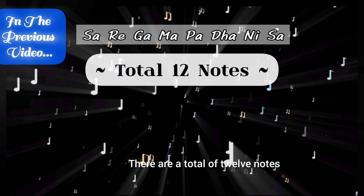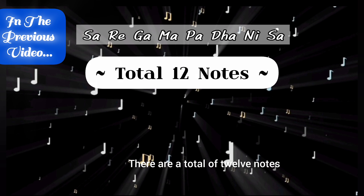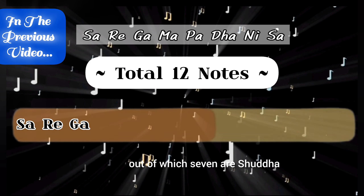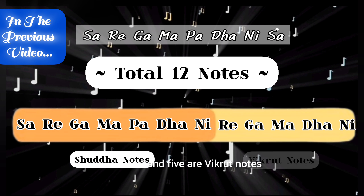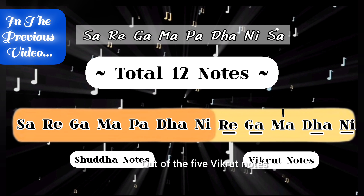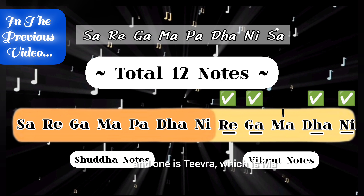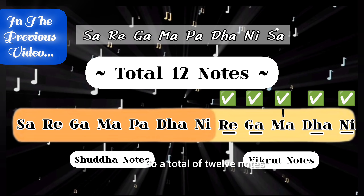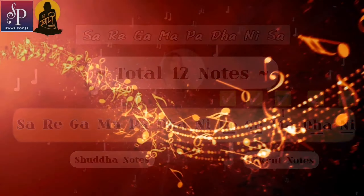There are a total of twelve notes, out of which seven are Shuddha and five are Vikrut notes. Out of the five Vikrut notes, four are Komal — Re, Ga, Dha, Ni — and one is Teevra, which is Ma. So a total of twelve notes.